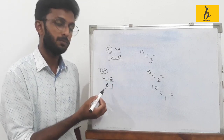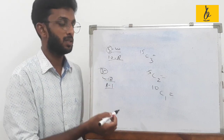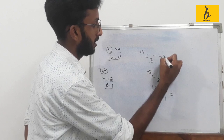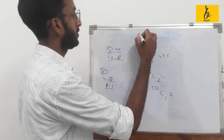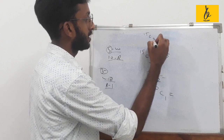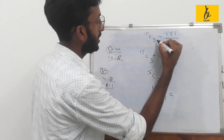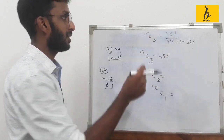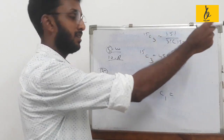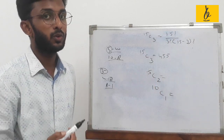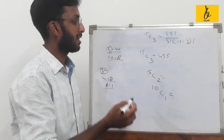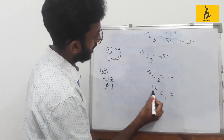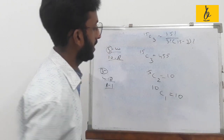15C3 equals 15 factorial divided by 3 factorial into (15 minus 3) factorial. After simplification, 15C3 is calculated step by step.